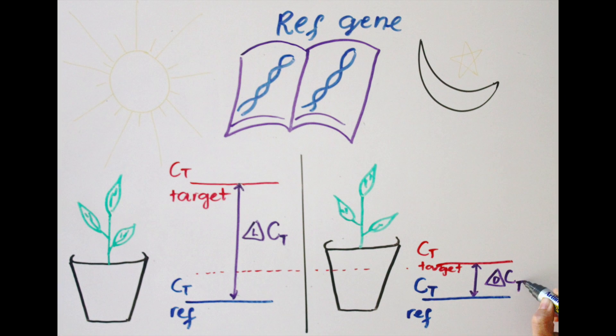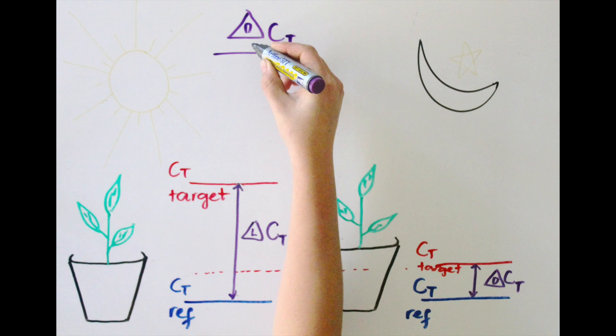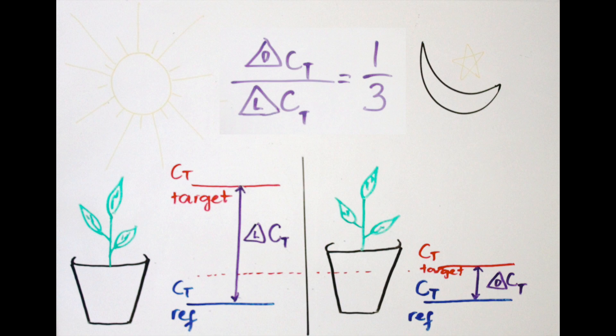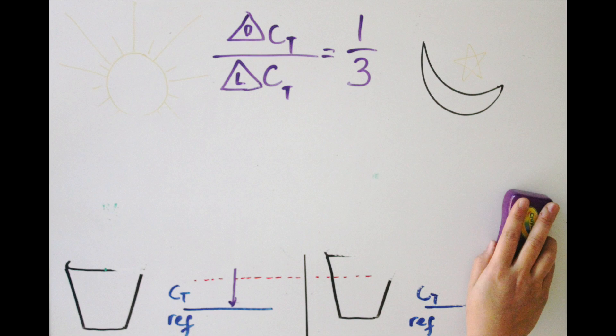So the ratio of the two CT values is delta CT for the dark treatment divided by delta CT for the light treatment, which equals one third. Showing that delta CT has decreased by a factor of three, which means that gene expression of a target gene is greater in the dark treated sample. This is how relative quantification using a reference gene helps detect change in the expression of your target gene.